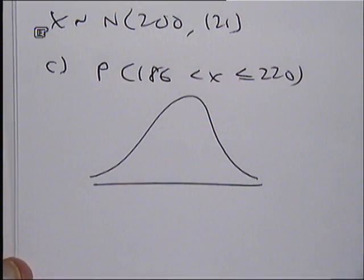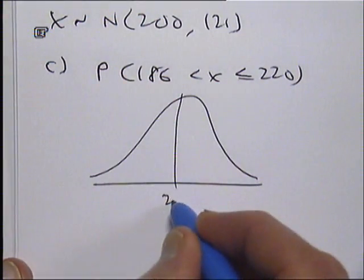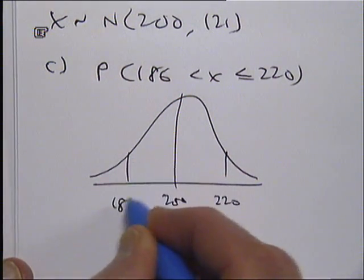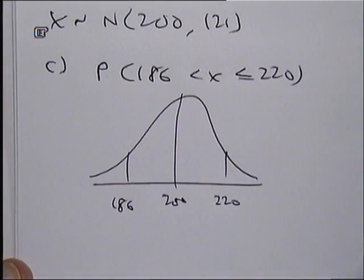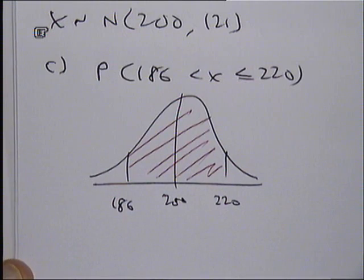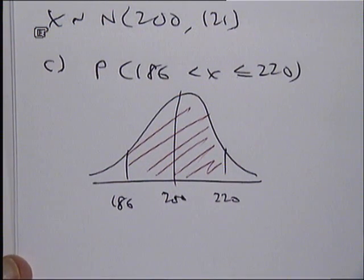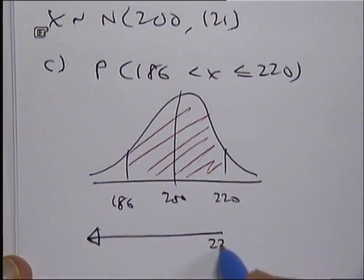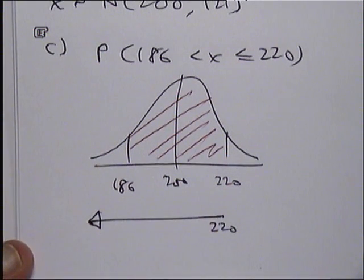We've got our normal curve, we've got our mean at 200, we've got 220, which will be over here somewhere, we've got 186, which is over here somewhere, and we are after this area over here. Now if you think about it, that is the area to the left of 220, take away the area to the left of 186.